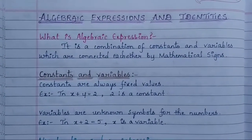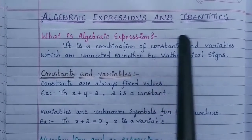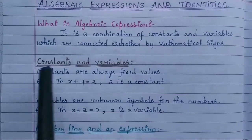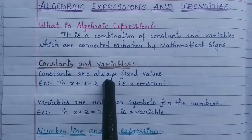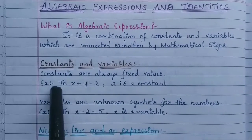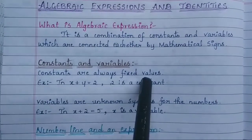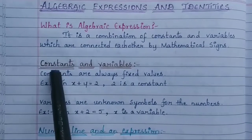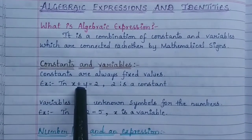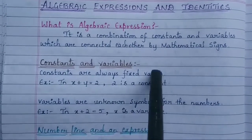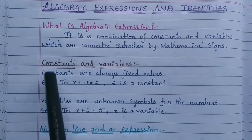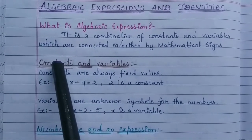Now we have to know what are constants and what are variables. Constants are always fixed values — the numerical quantity is nothing but the constant in our expressions. For example, in x + y = 2, here 2 is the constant. Wherever we get some fixed numerical value, that is our constant.